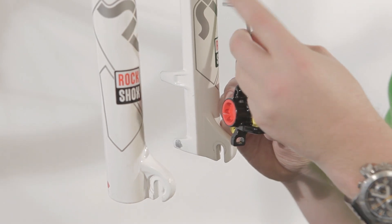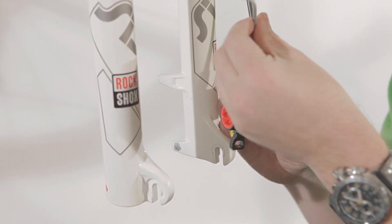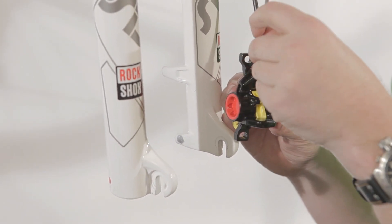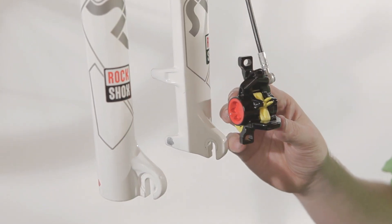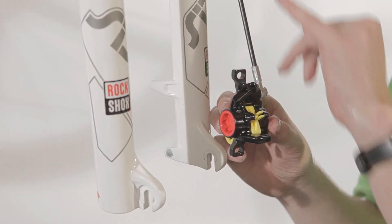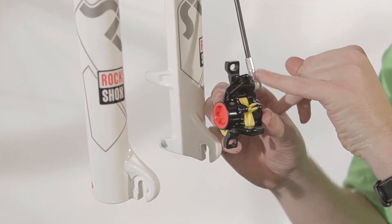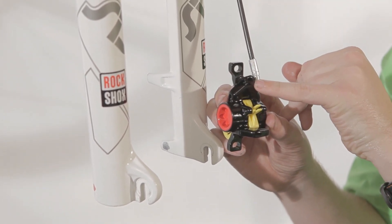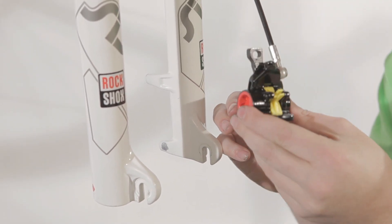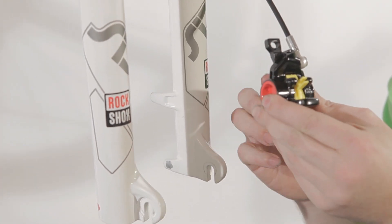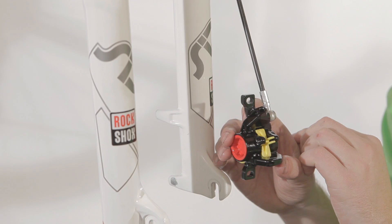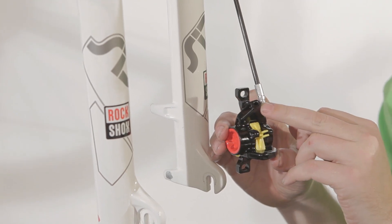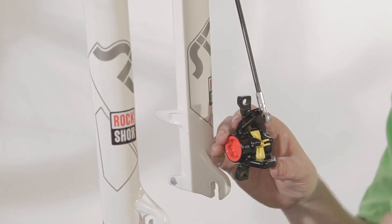So you open up the bleed port and you take out the screw. Normally if the system is completely filled with oil, you will see the oil dripping out. You raise the element to make sure that the oil goes down a little bit. Now since there is a large amount of air trapped inside, you don't see any oil yet. No worries, we are going to take that out.